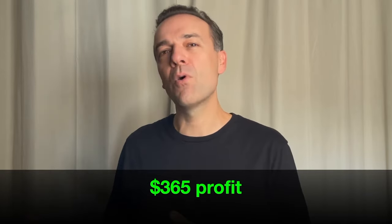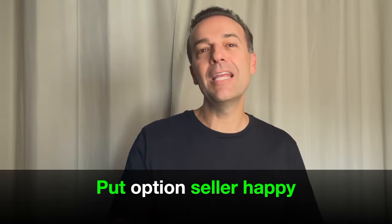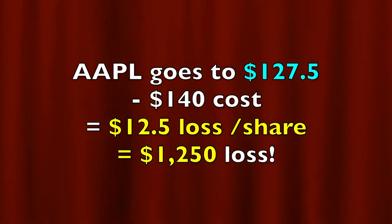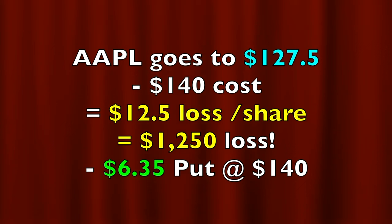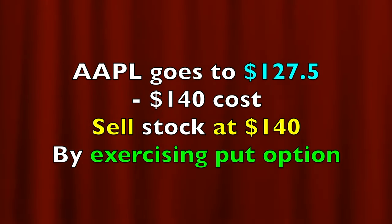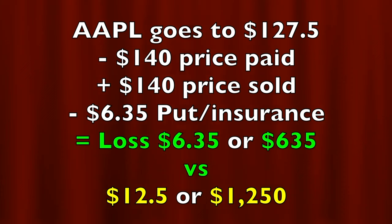You made some money, but you realize that you could have made more if you hadn't bought that protective put option. On the other hand, the person that sold that put option and received your $635 is happy because they get to keep all that money. But what if instead of Apple going up to $150, what if it went down to $127.50 per share? Now Apple is trading at $12.50 per share less than the $140 that you bought it at. If you multiply that times 100 shares, then you would have lost $1,250. But remember, you bought that put option at the $140 strike price as insurance. Now you can exercise your option and sell your Apple stock at $140, even though the stock is trading at $127.50. As a result, you didn't lose anything on the stock — your only loss would be the cost of buying that put option contract, which is $635. And that's a whole lot better than losing the whole $1,250.